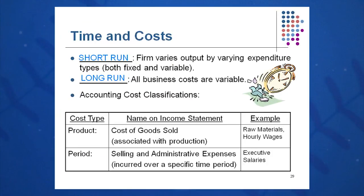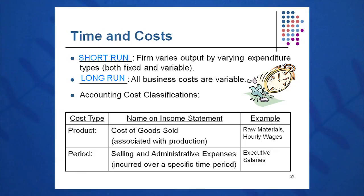Finally, I put on my time and cost goggles and look at the short run and the long run. In the short run, we have fixed and variable expenses, and in the long run, all expenses are variable on the income statement. You may also see accountants refer to product costs — generally manufacturing costs affiliated with cost of goods sold, like raw material costs and hourly wages. Period costs can be things like selling, general and administrative expense; an executive salary might be a period cost, which may be fixed in the short term and variable in the long run.